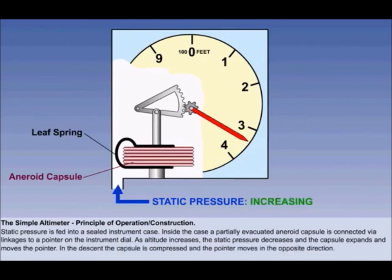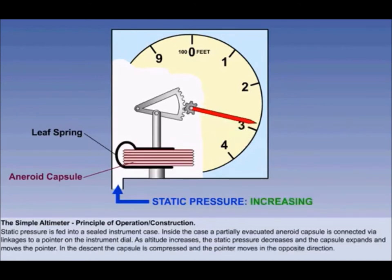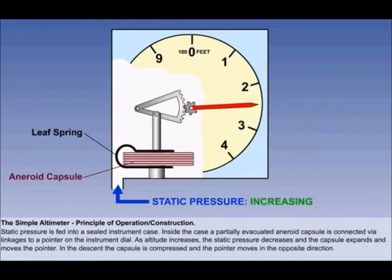In the descent, the capsule is compressed, and the pointer moves in the opposite direction.